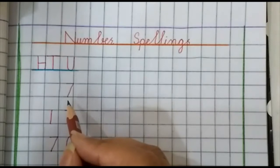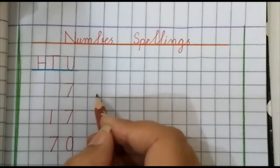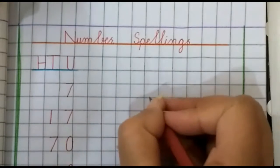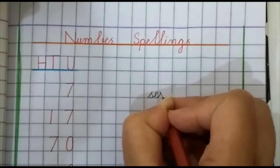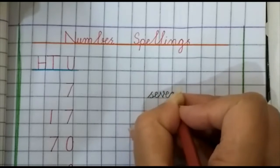Our first number is 7. Skip 1, 2, 3, 4, 5 blocks right here. 7. S, E, V, E, N. Seven.